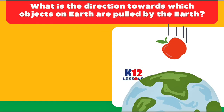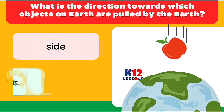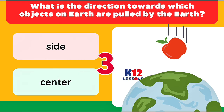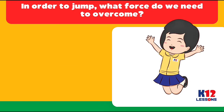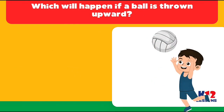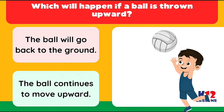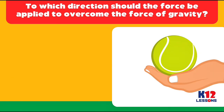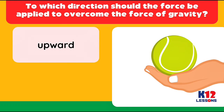What is the direction towards which objects on Earth are pulled? Towards the center. In order to jump, what force do we need to overcome? Gravity — not friction. Which will happen if a ball is thrown upward? The ball will go back to the ground. To which direction should force be applied to overcome gravity? Upward.